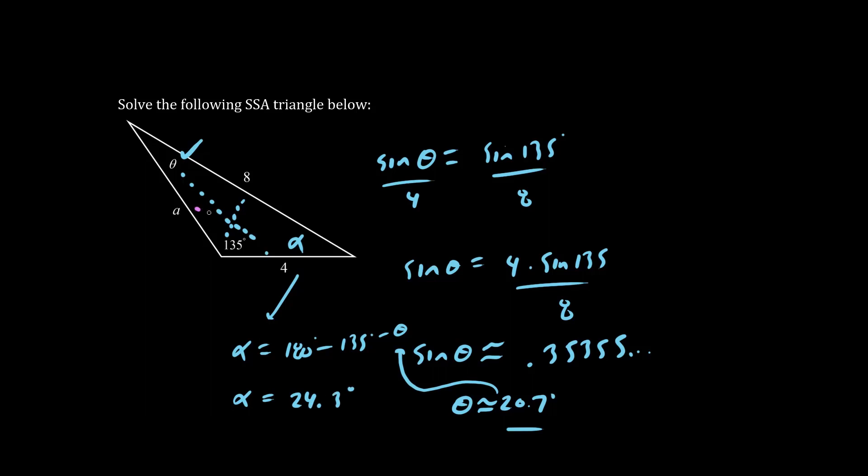Now let's solve for a by playing catch this way. Here and then here. So we have a over sine alpha equals the side length 8 over sine 135. Multiplying both sides by sine alpha, and by the way alpha here is approximately 24.3.